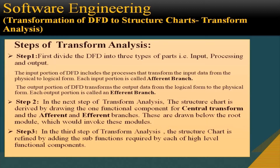In step 2 of transform analysis, the structure chart is derived by drawing one functional component for the central transform and for the afferent and efferent branches. These are drawn below the root module, which invokes these modules. In step 3, the structure chart is refined by adding the sub-functions required by each of the high-level functional components.